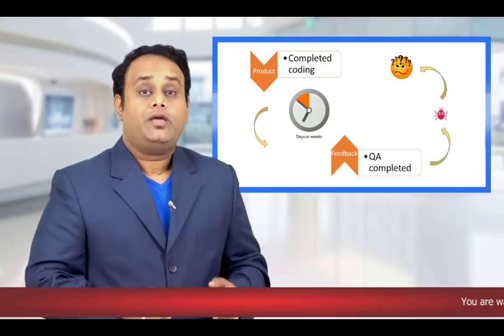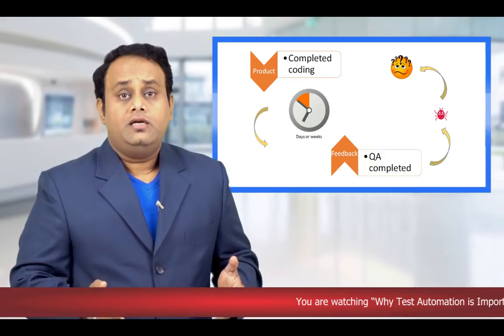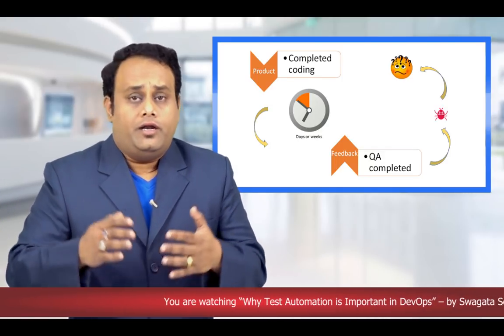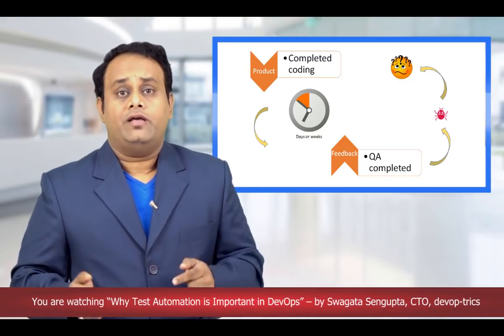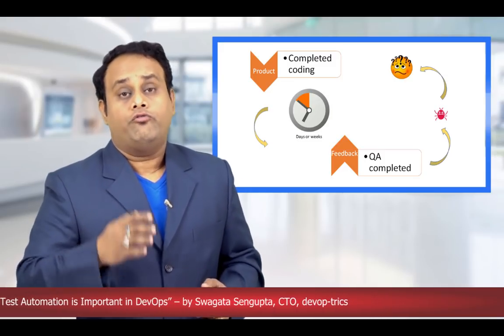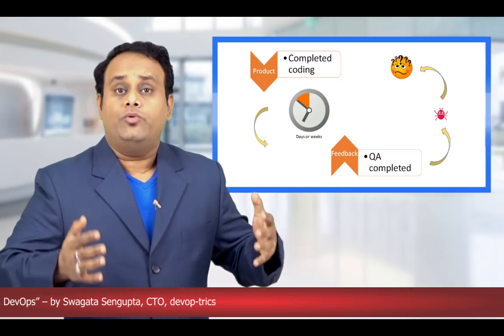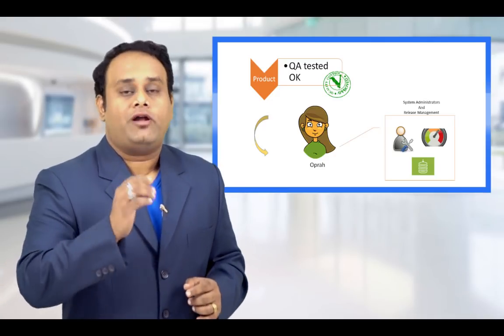During the time the QA team takes to give feedback and come up with defects, the dev team would have already moved to coding new products, new security updates, and new fixes. Now when the QA team is back with a bug, the dev team really don't know how to refocus on that work because they have been doing so many things in parallel. After QA tests the build and certifies it as okay, it is passed on to Opera's team.